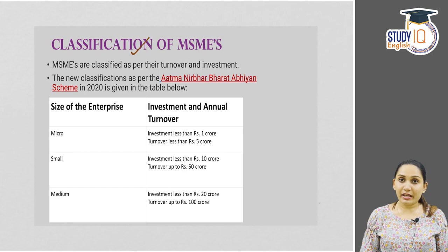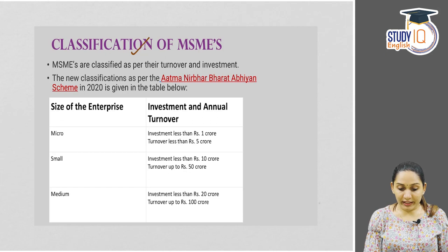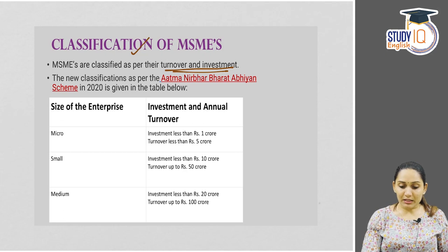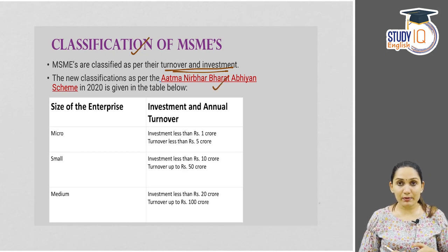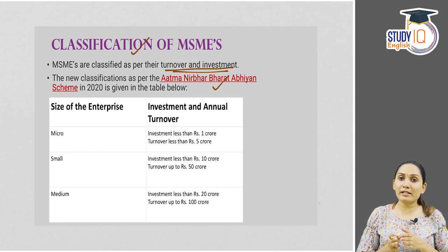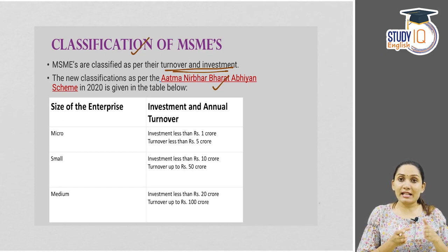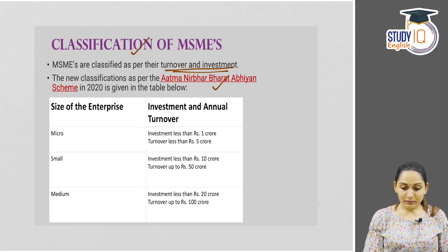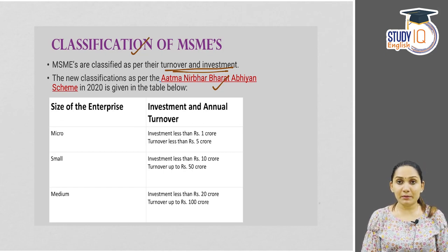When we come to the classification of MSMEs — how can we classify MSMEs? MSMEs are classified as per the turnover and the investment. This is the latest classification according to the Atmanirbhar Bharat Abhiyan scheme in 2020. Earlier there was a different kind of classification, covering micro units, small units, and medium units.